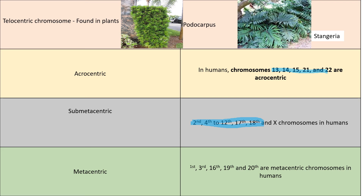Chromosomes 2, 4, 5, 6, 7, 8, 9, 10, 11, 12, 17, 18, and the X chromosome are submetacentric. Chromosomes 1, 3, 16, 19, and 20 are metacentric. So in humans, submetacentric and metacentric chromosomes are the most abundant.